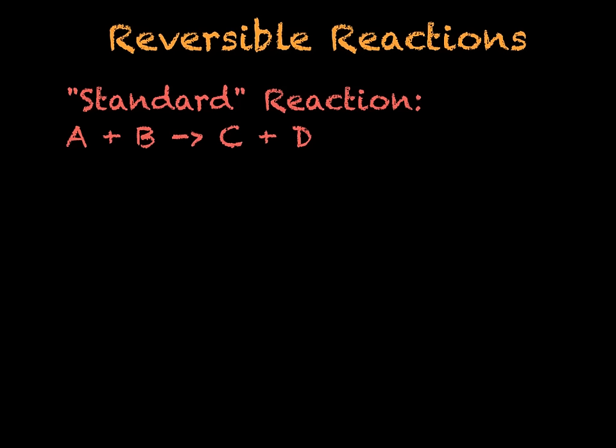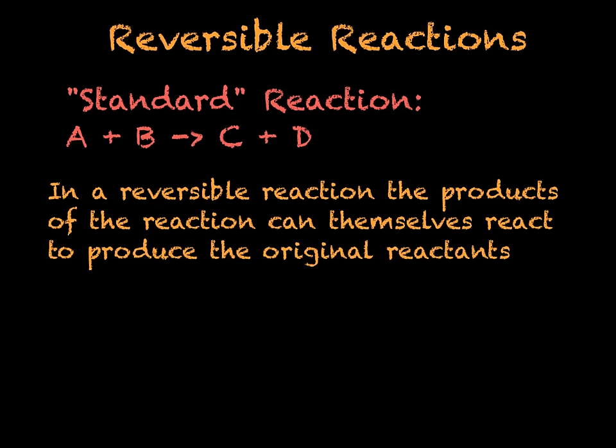So what are reversible reactions? So far in chemistry you'll have looked at reactions in terms of reactants and products: A plus B goes to C plus D. In a reversible reaction, the products of the reaction can themselves react to produce the original reactants. So here we would have A plus B with a reversible arrow — an arrow pointing forwards and an arrow pointing backwards — going to C plus D. This means that C plus D can react to form A plus B.